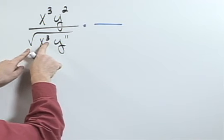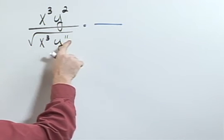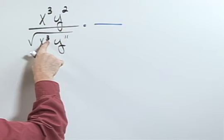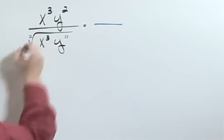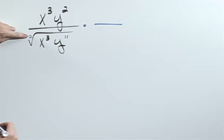Well notice that I have x to the third and y to the eleventh. What I need to do is get these to be some multiple of two because even though it's not written, there's a two right there.